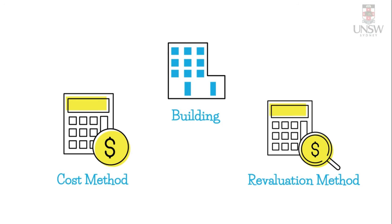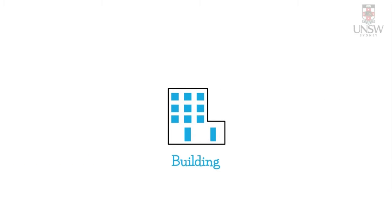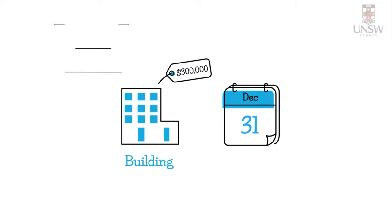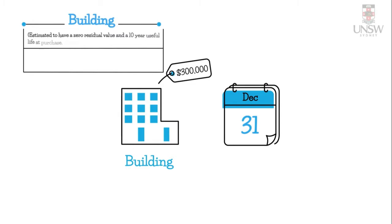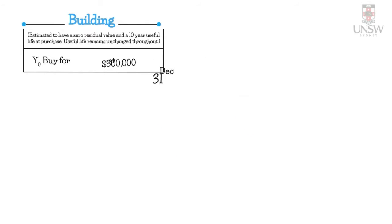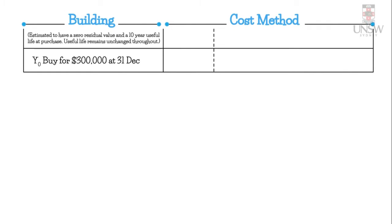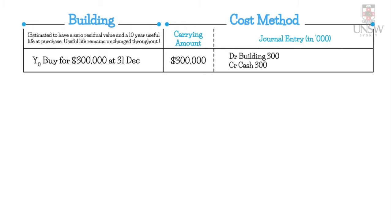I'm going to put a link in the description of this video for the template and also the solution, so you can check your workings. We start off in year zero, and we purchased a building for $300,000 at the 31st of December. This building had a zero residual value and a 10-year useful life at purchase. We'll start by looking at the cost method, so the initial carrying amount is $300,000, and we record: debit building $300,000, credit cash $300,000.